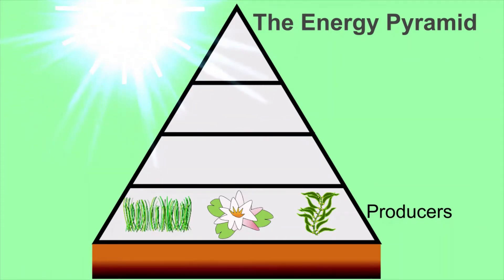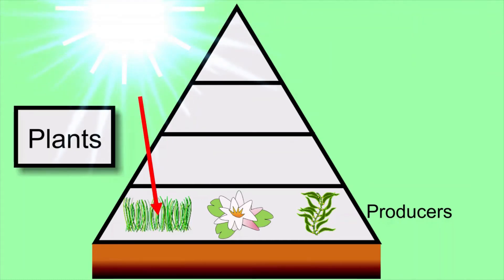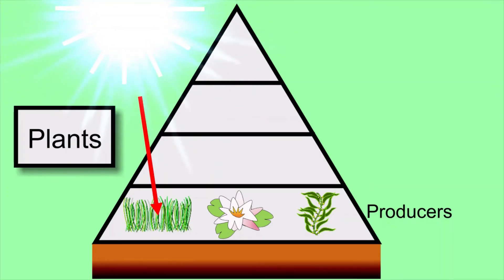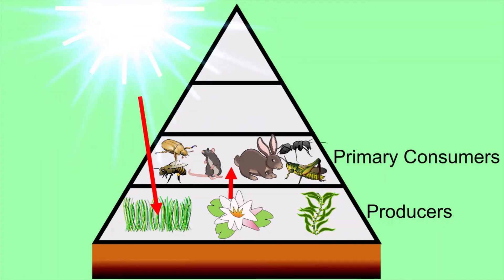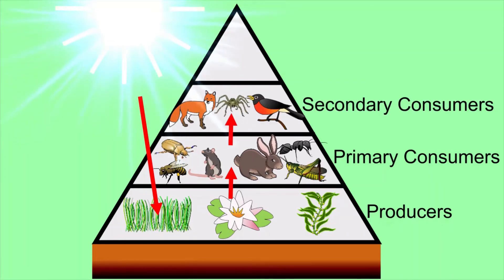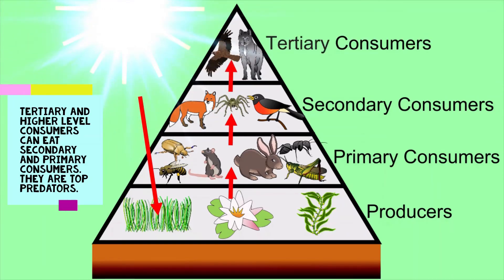This is the energy pyramid. Living things depend on sunlight for energy either directly or indirectly. Only producers such as plants can absorb sunlight's energy and turn it into food. Plants and other producers are at the bottom of all food chains. Herbivores are primary or first level consumers — they eat plants. Secondary consumers eat primary consumers; for example, a robin might eat a grasshopper. Tertiary consumers, or third level consumers, eat secondary consumers; for example, a wolf might eat a fox.